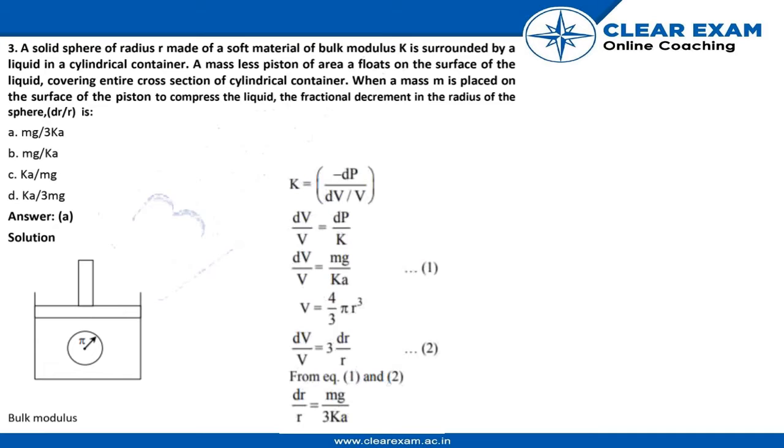It says a solid sphere of radius R made of soft material of bulk modulus K is surrounded by a liquid in a cylindrical container. A massless piston of area F floats on the surface of the liquid covering the entire core section of the cylindrical container. When a mass M is placed on the surface of the piston to compress the liquid, the fractional decrement on the radius of the sphere is dr by r.